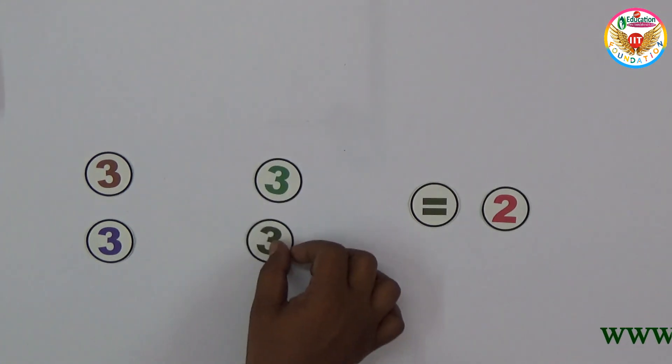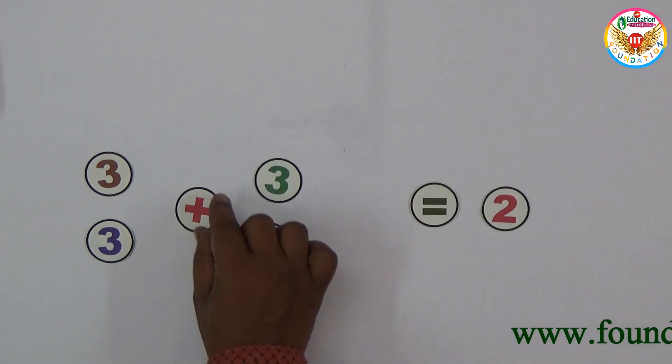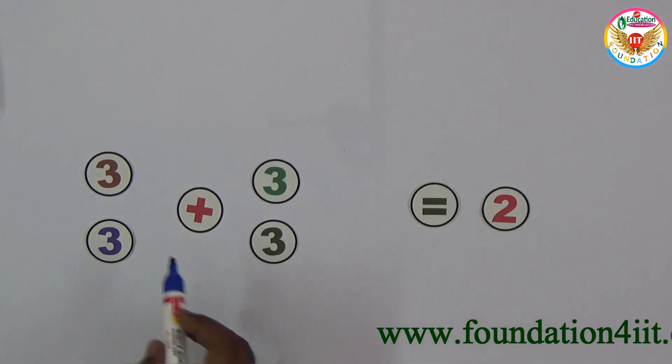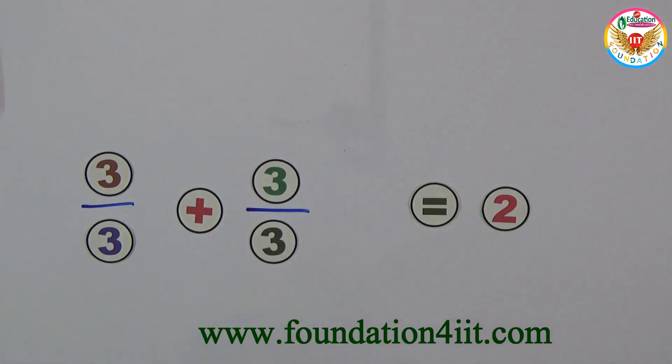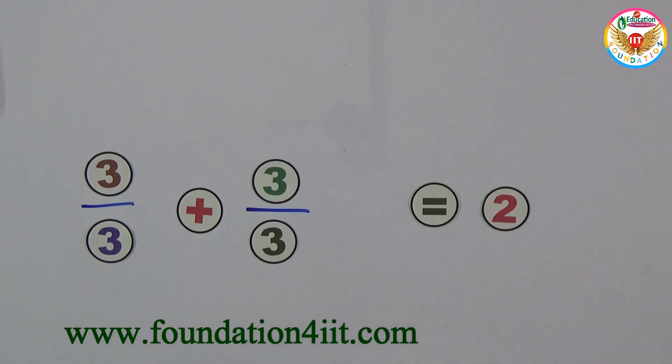3÷3 + 3÷3. If you use mathematical operation, 3 divided by 3 is 1 and plus 3 divided by 3 is 1. So 1+1 is equal to 2.